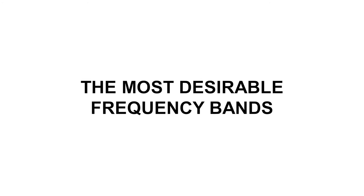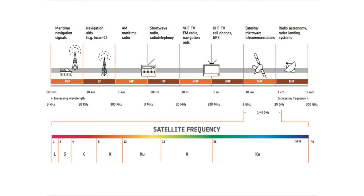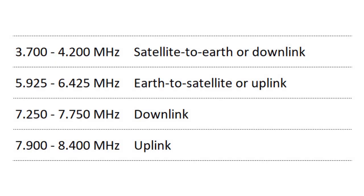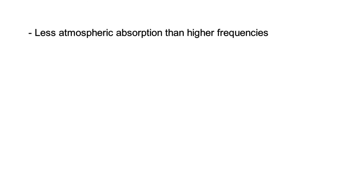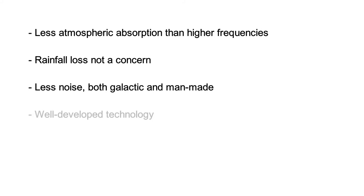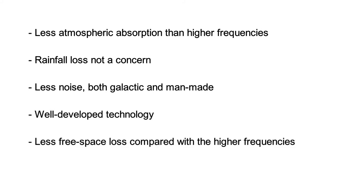The most desirable frequency bands for commercial satellite communication are in the spectrum 1000 to 10,000 megahertz. These bands are: 3700 to 4200 megahertz (satellite to earth, downlink); 5925 to 6425 megahertz (earth to satellite, uplink); 7250 to 7750 megahertz (downlink); and 7900 to 8400 megahertz (uplink). These bands are preferred for the following reasons: less atmospheric absorption than higher frequencies, rainfall loss is not a concern, less noise both galactic and man-made, well-developed technology, and less free space loss compared with higher frequencies.